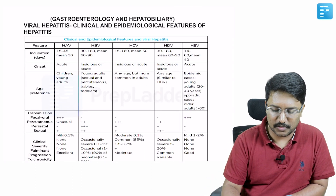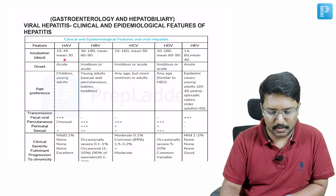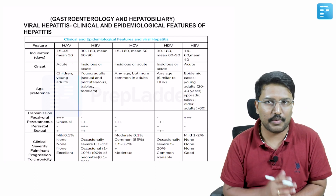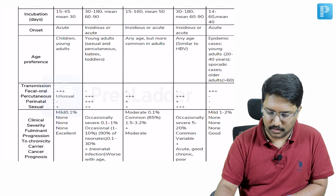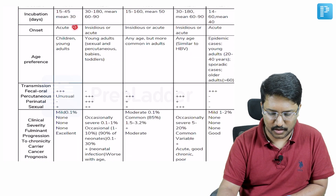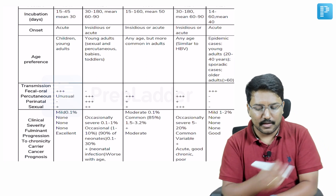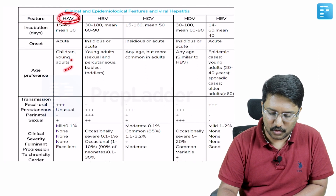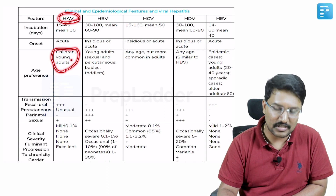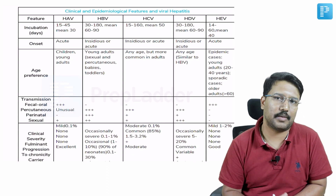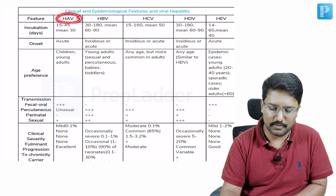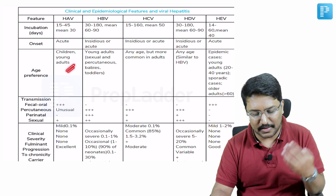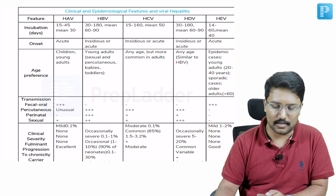Hepatitis A virus has an incubation period of around 15 to 45 days with a mean of 30 days. The onset is always acute — it is not a chronic entity. HAV is the most common cause of acute viral hepatitis in children, though overall the most common cause is hepatitis E. It usually affects children and unvaccinated young adults.